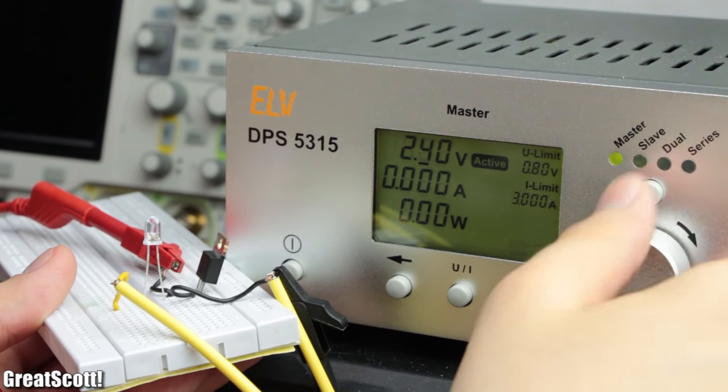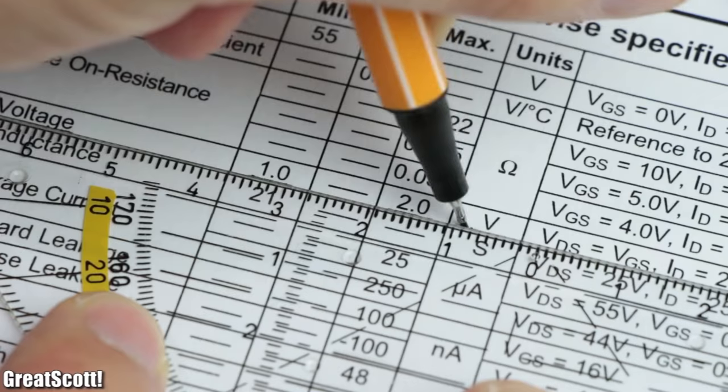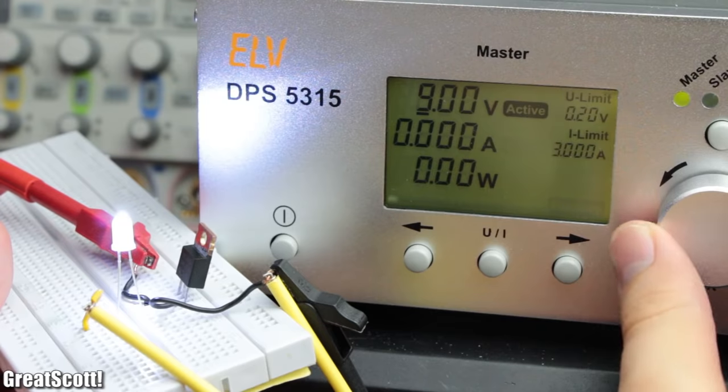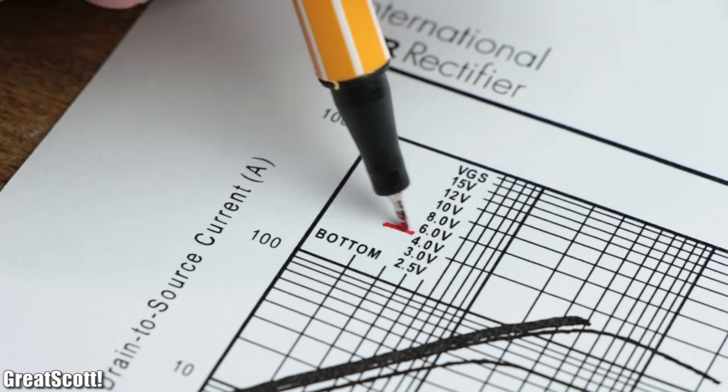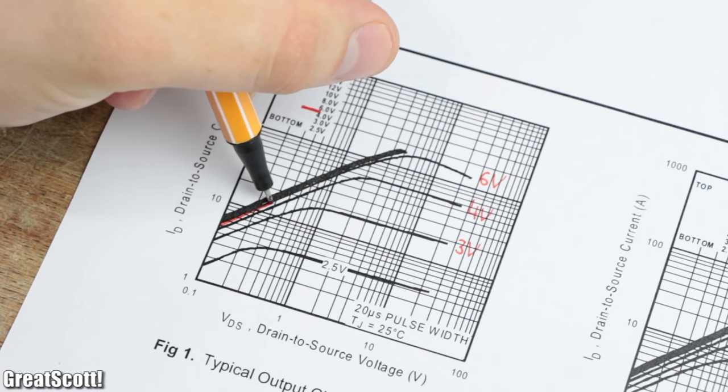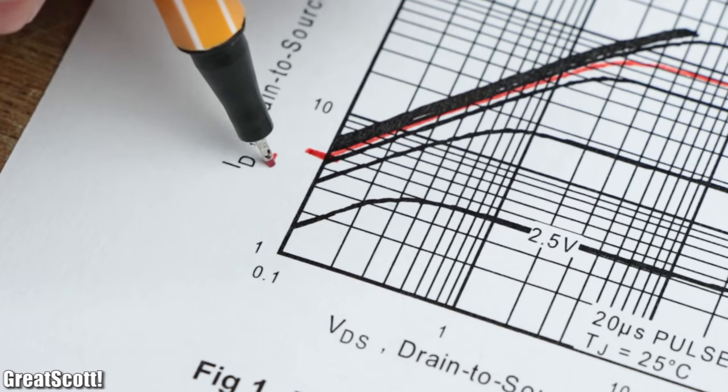This voltage needs to be higher than the threshold voltage mentioned in the datasheet but lower than the maximum rated gate-to-source voltage. So with the 5V of the Arduino, we should easily be able to control around 5A of current while maintaining the lowest possible drain-to-source voltage.